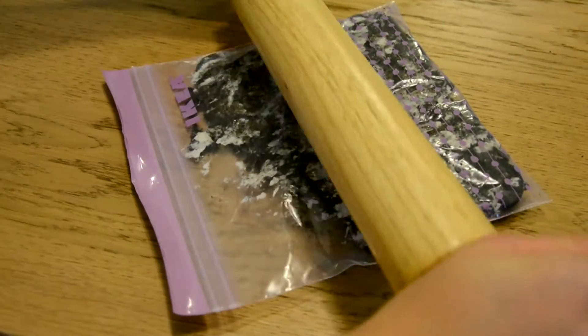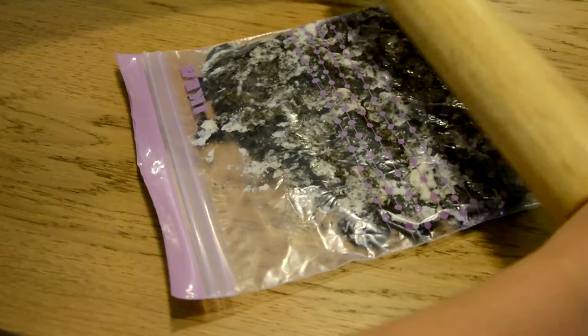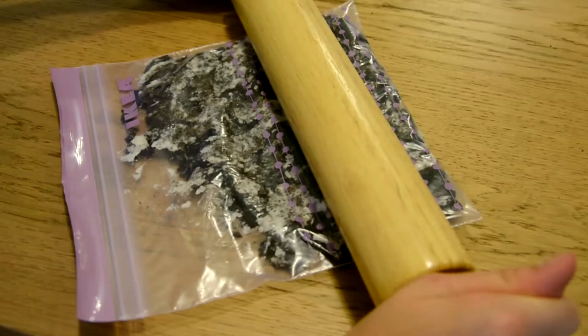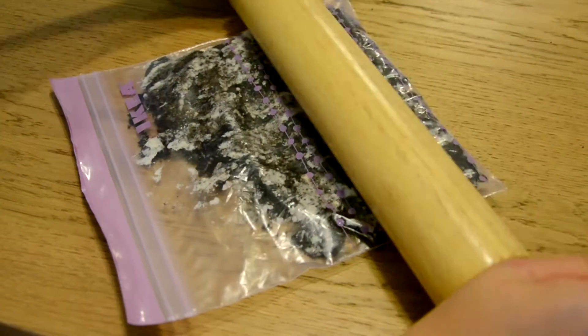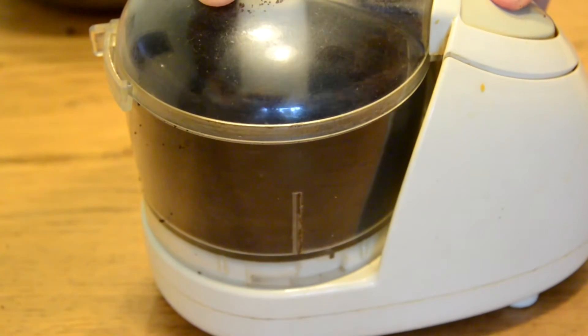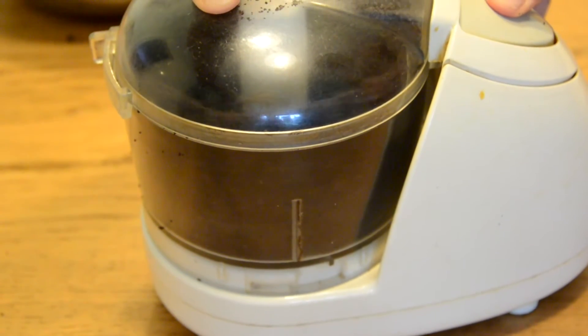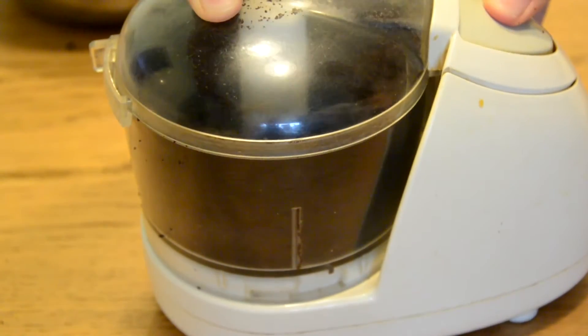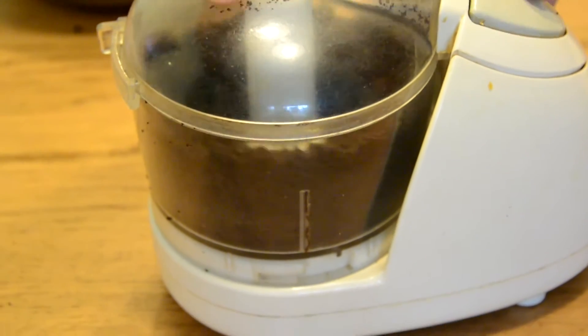First, you want to crush 30 of the Oreos you have, not all of them. If you don't have a food processor, you could use a rolling pin and put your Oreos in a ziplock bag. But I used a food processor because it was so much easier and quicker to get them into fine crumbs.